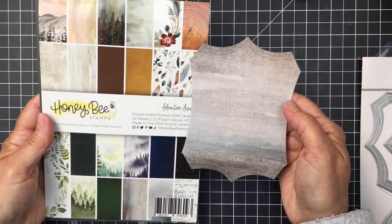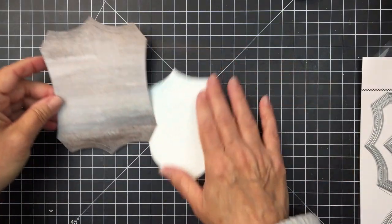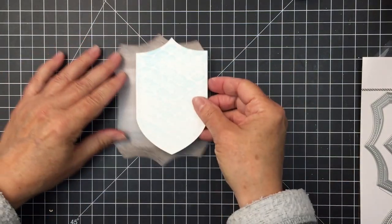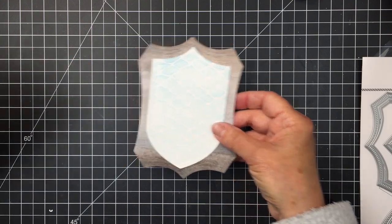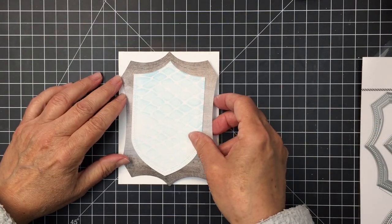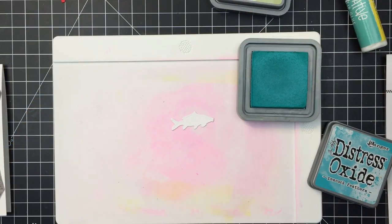I'm also going to be using the Adventure Awaits paper pad and I've used one of the Shield Layering Frames dies as well. It's going to coordinate so nicely with the other piece that I cut from that die set and these are all going to layer together nicely on my card base which is an A2 size top folding card base.